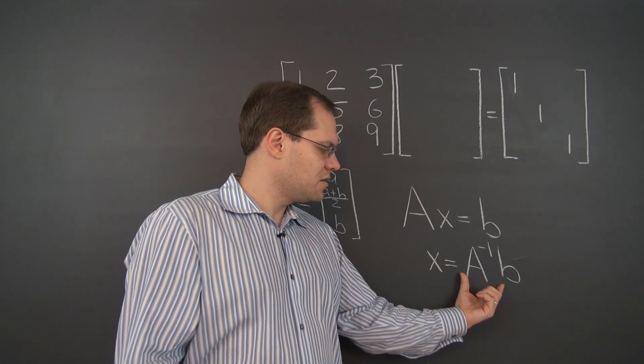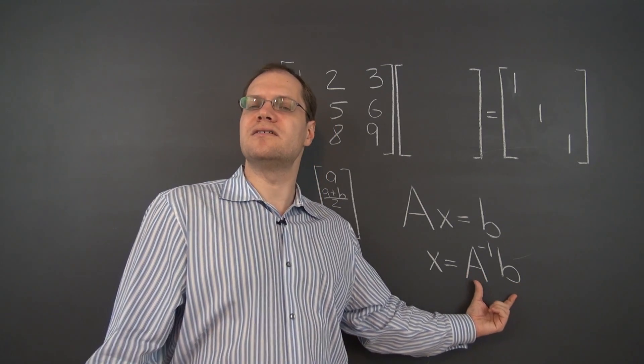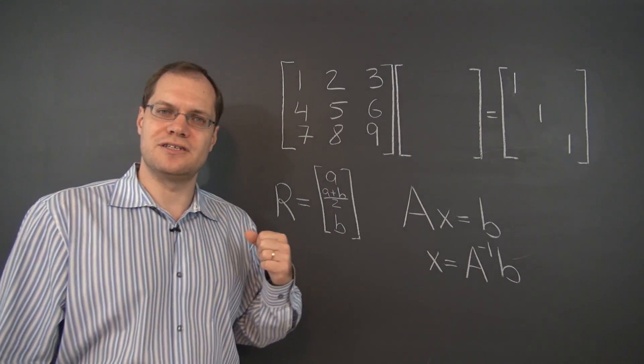But if there was such a thing as an inverse, well, A inverse B right here is the solution. So, that would be contradiction number one.